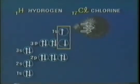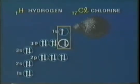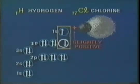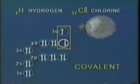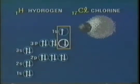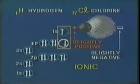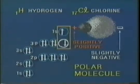The chlorine atom has a stronger attraction for electrons than the hydrogen atom. As a result, the shared pair of electrons spends more time near the chlorine nucleus than the hydrogen nucleus. This produces a slightly positive charge on one end and a slightly negative charge on the other end of the molecule. In one sense the bond is covalent because an electron pair is being shared, but in another sense the bond is ionic because the molecule has a positive and a negative end. Such a bond produces what is called a polar molecule.